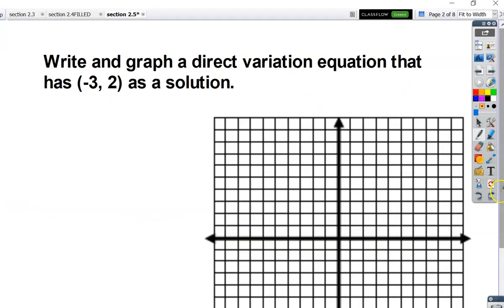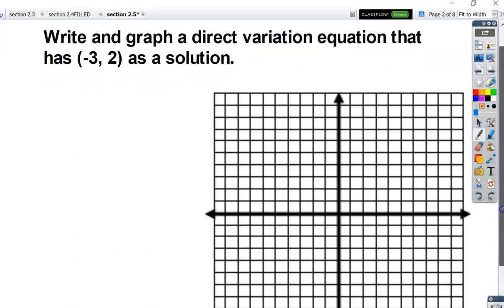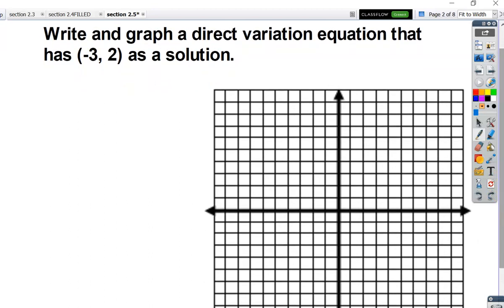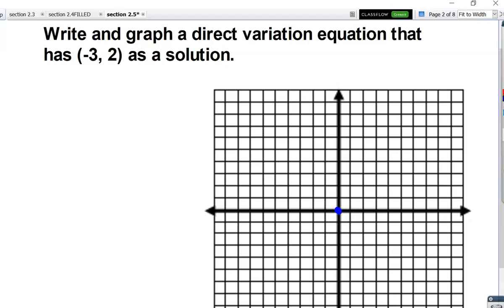So for the first example, we're going to write and graph a direct variation equation that has negative 3, 2 as a solution. So remember, in our previous slide, we said that all of them always pass through the origin. We were given the point negative 3, 2, so I'm going to plot the point negative 3, 2.